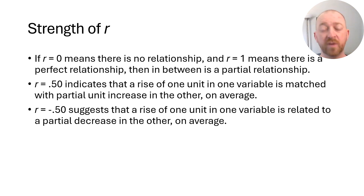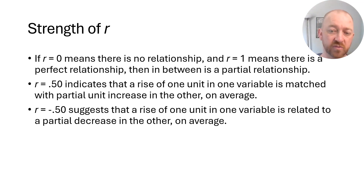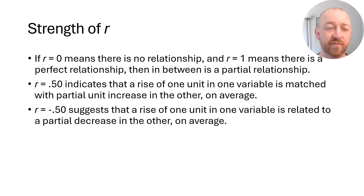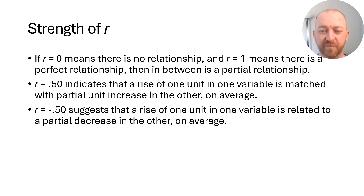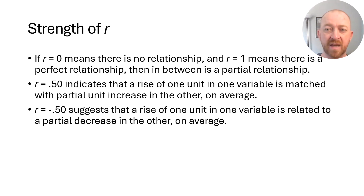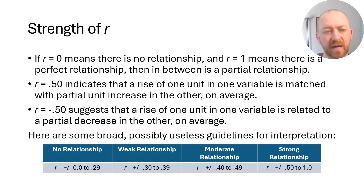If you have a negative value like negative 0.50, that means as one variable rises, the other tends to fall — with pretty good but not perfect predictability. That's a quick and dirty look at how correlation can be interpreted. Here are some guidelines to get a better idea of what a given degree of correlation suggests.